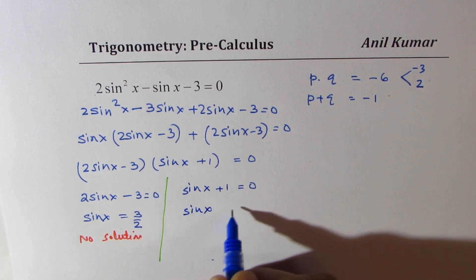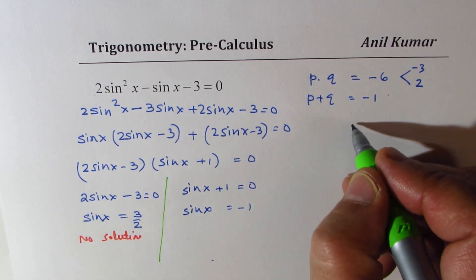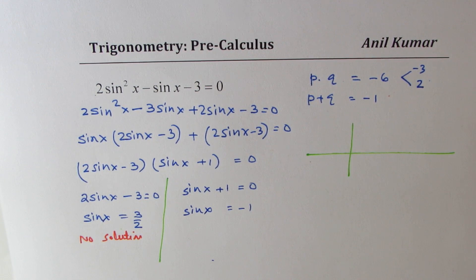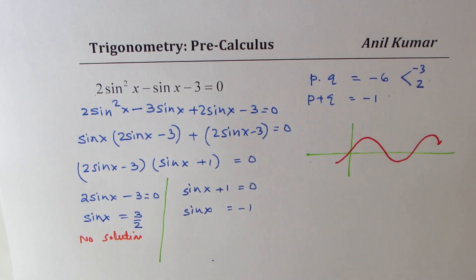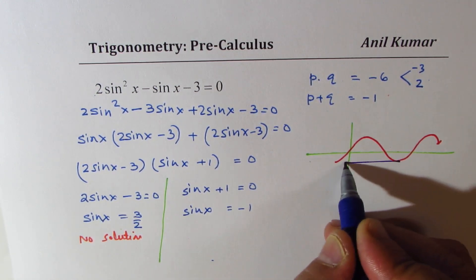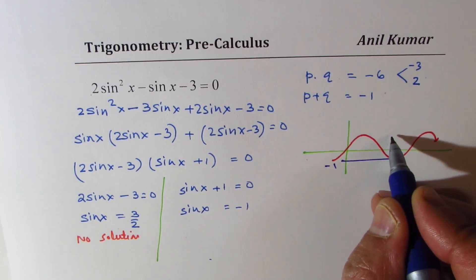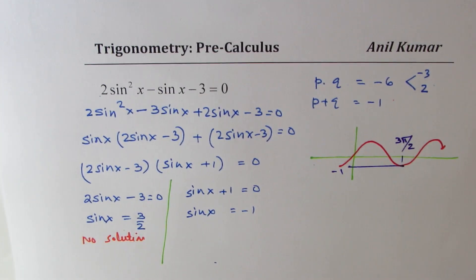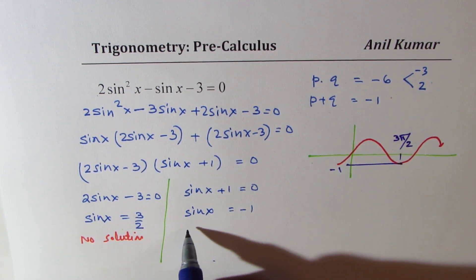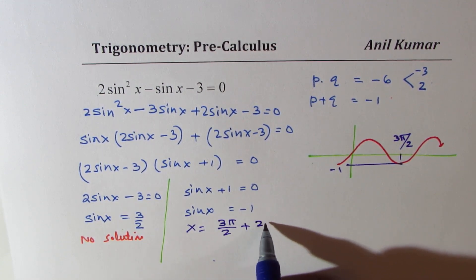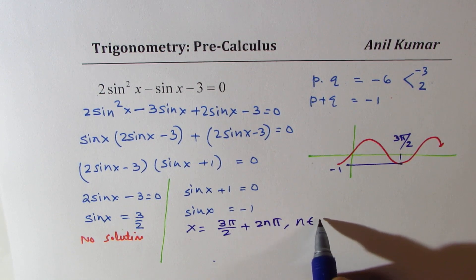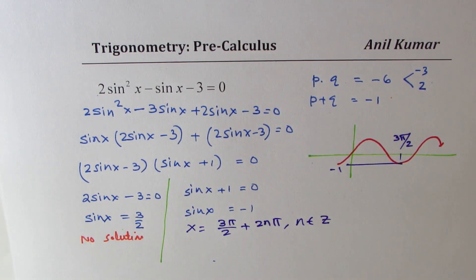From sin x + 1 = 0, sin x = −1. From the graph, sine equals −1 at 3π/2, and this repeats every 2π. So x = 3π/2 + 2nπ, where n belongs to integers. That is how you solve this question.